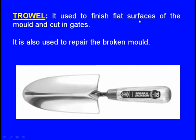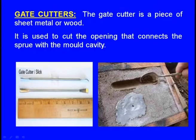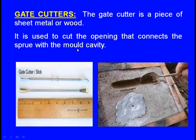Next, trowel: it is used to finish the flat surfaces of the mould and cut ingates. It is also used to repair broken moulds. Next, gate cutter: it is a piece of sheet metal or wood used to cut the opening that connects the sprue with the mould cavity.